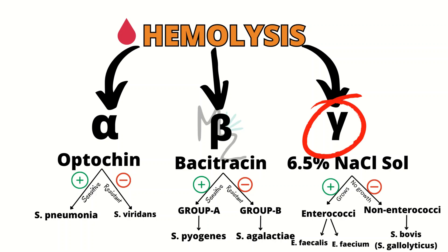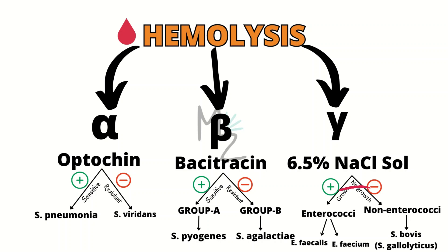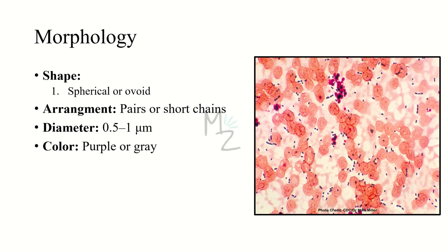Gamma hemolytic bacteria are further classified based on growth in 6.5% salt solution. If a bacterium grows in that solution it is enterococci, further classified into enterococcus faecalis and enterococcus faecium. If it does not grow in 6.5% salt solution it is non-enterococci, called strep bovis or strep gallolyticus.